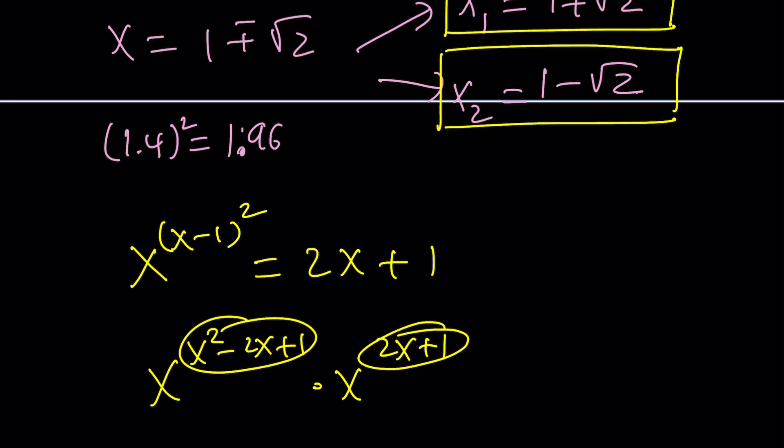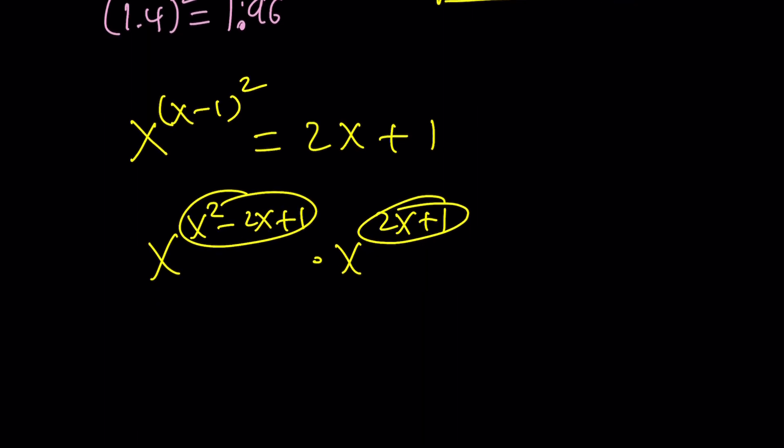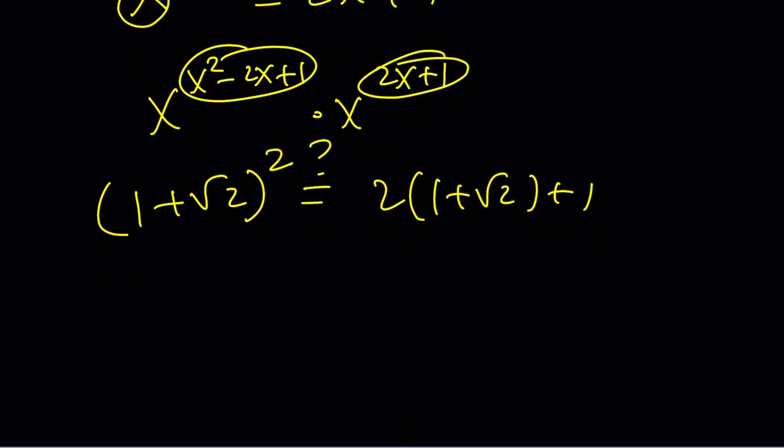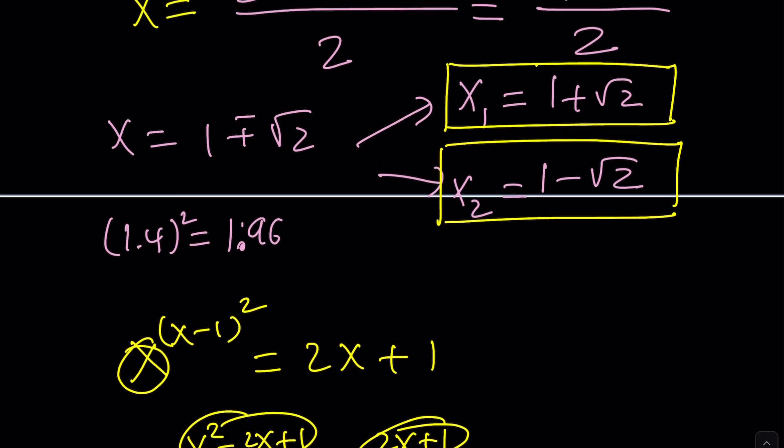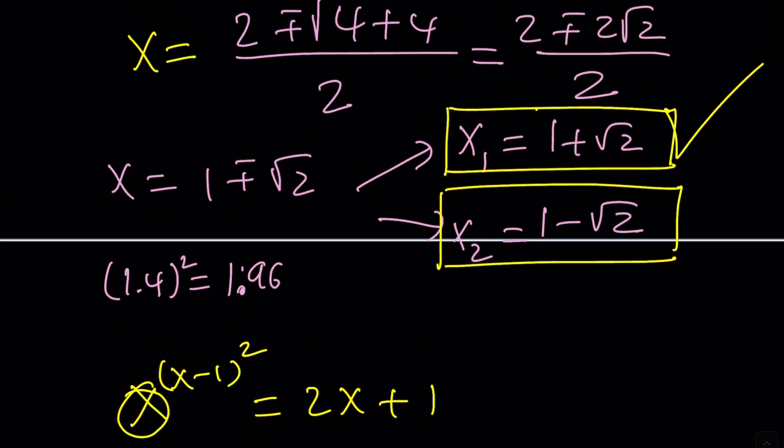So 1 plus root 2. Do you think that's going to work? Let's plug it in. Replace x with 1 plus root 2. And then subtract 1 from it. That's going to give you root 2 squared. You're going to get 2. And then 2 times 1 plus root 2 plus 1. Are they equal? Check. This would give me 3 plus 2 root 2. This would give me 3 plus 2 root 2. So yes, definitely, this is a solution. Nice.